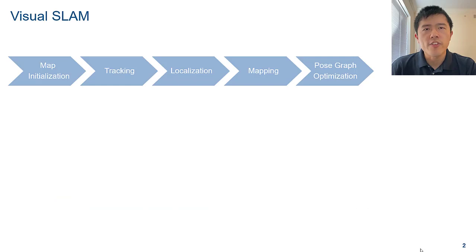This is a typical feature-based Visual SLAM workflow. You can use the Computer Vision Toolbox to build the pipeline. Let's go over the steps one by one.